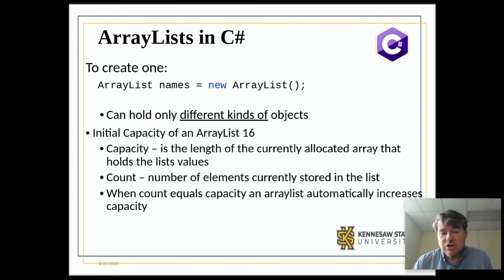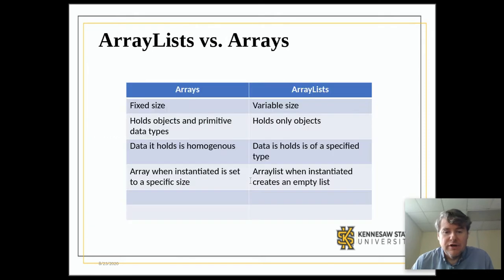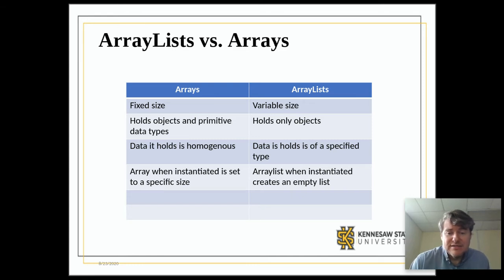In C#, the syntax is slightly different: ArrayList variableName equals new ArrayList — that can hold different kinds of objects. Initially it sets the capacity to 16 by default, and it will still automatically grow. Instead of asking for Size, you ask for Count to know how many items are inside. As a quick review: arrays are of a fixed size whereas array lists are variable; arrays hold objects and primitive data types whereas in Java array lists only hold objects; and array lists hold homogeneous data of a specific type.